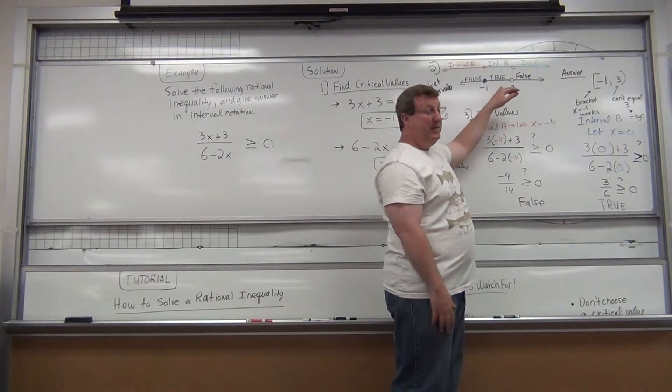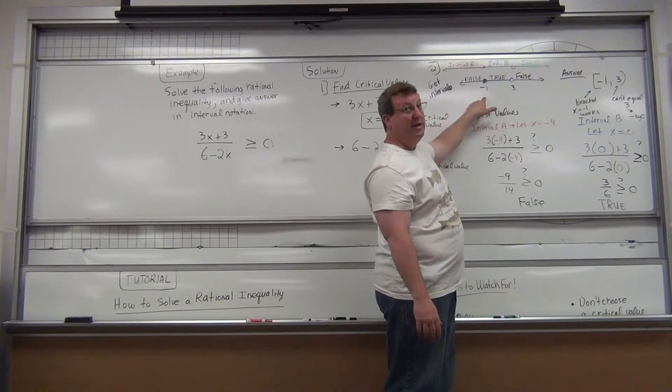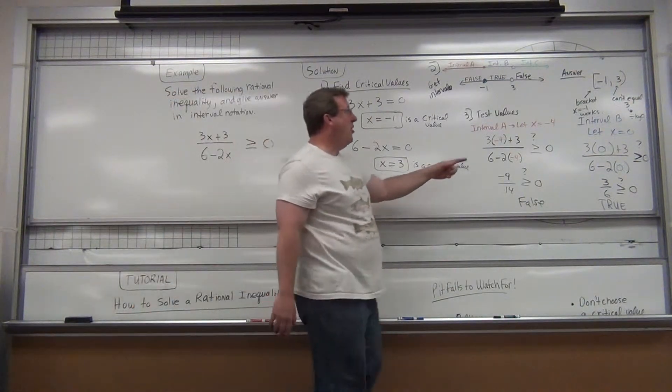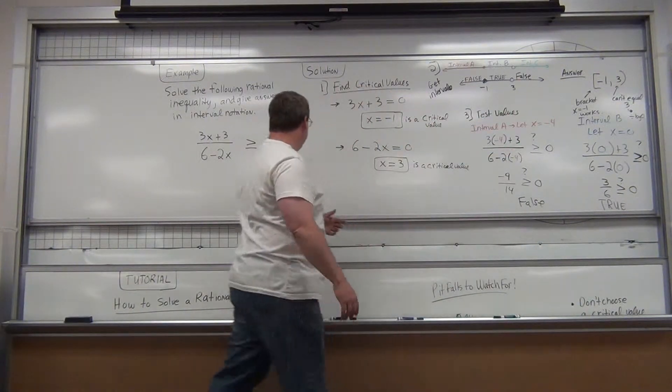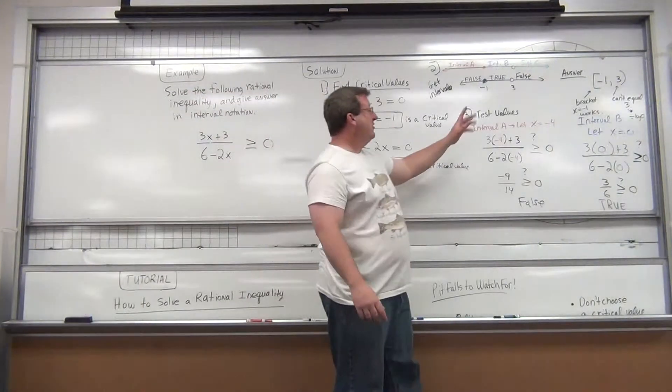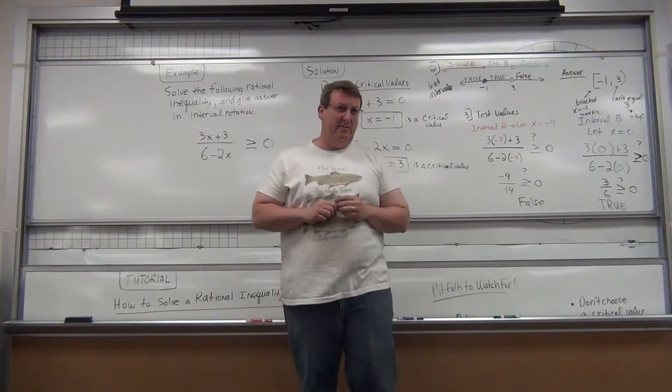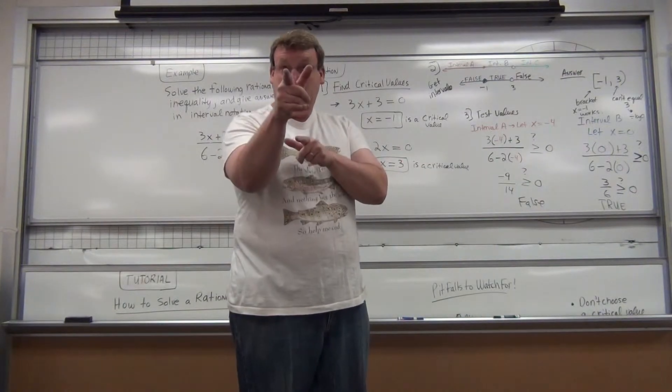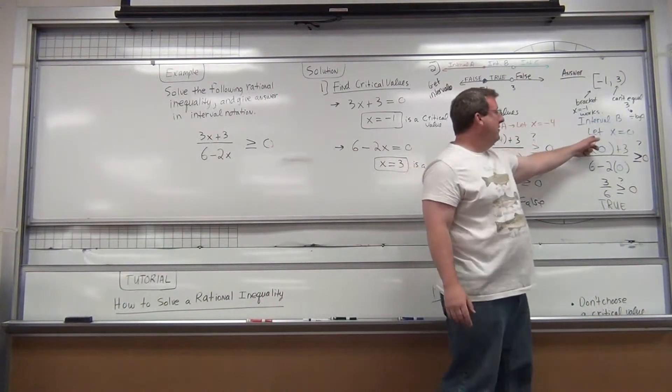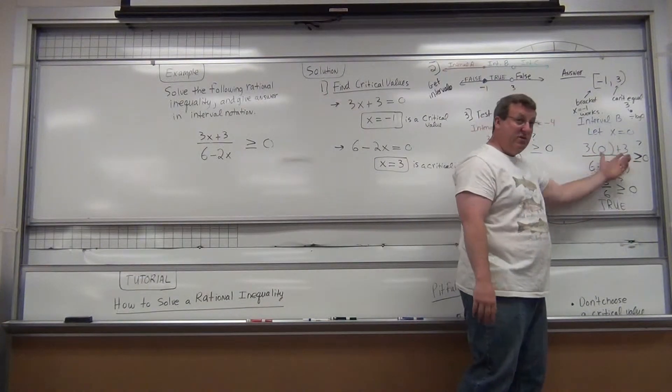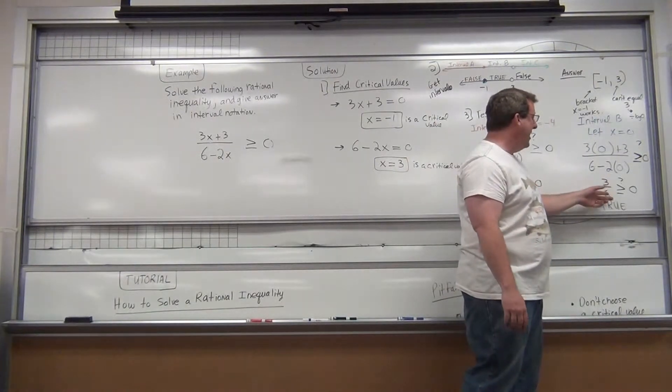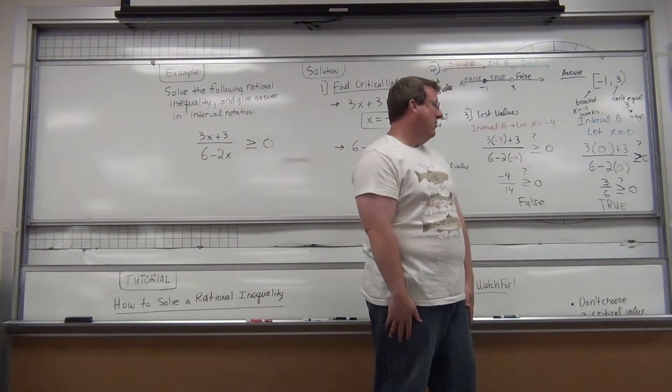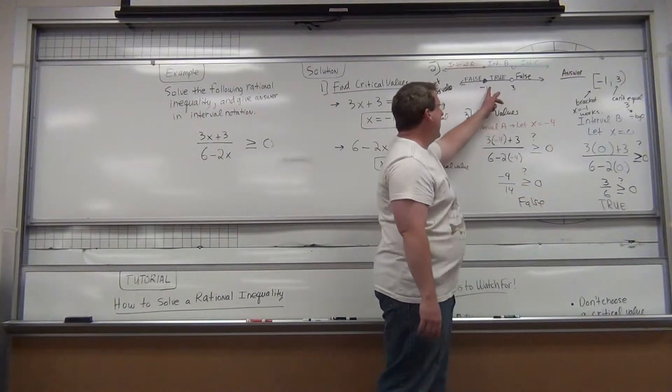So, let's go to interval b. What is interval b defined by? Notice I have a filled in circle at negative one. Because negative one can actually be a solution. And notice I have an open circle at three. As you know, three would make you divide by zero and it can't be part of the solution. So, can you choose any value between negative one and positive three? I always tell my students if it's a negative and a positive, choose the easiest number in the world to work with. Zero.